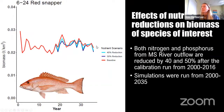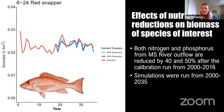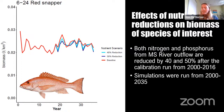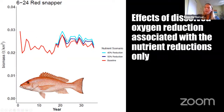For red snapper, it really depends per year. The size of the hypoxic zone or the severity of hypoxia really varies per year. So in some years, reducing nutrients by 40 or 50 percent ends up being a net positive effect, and in other years it may be a net negative effect — depending on how much the species is affected by hypoxia — but always slightly positive when we just reduce hypoxia.